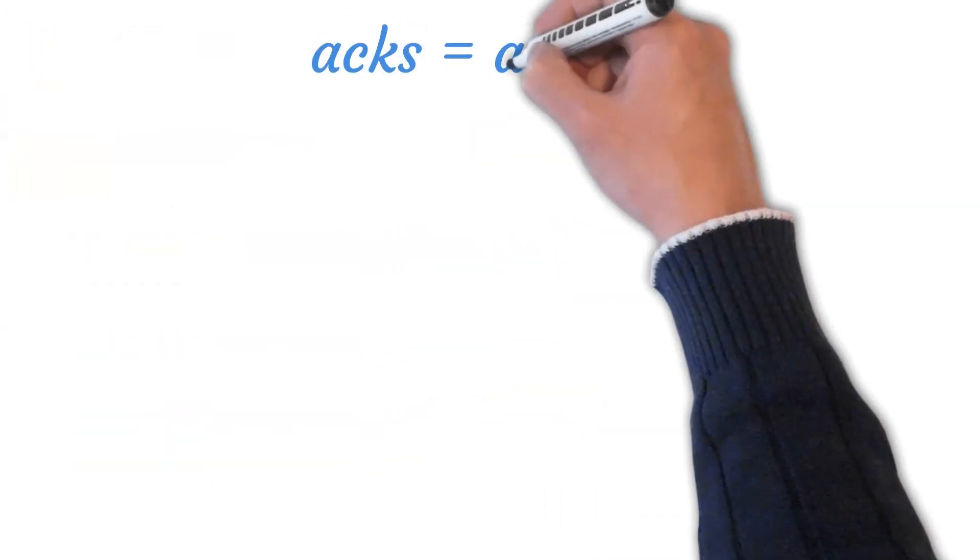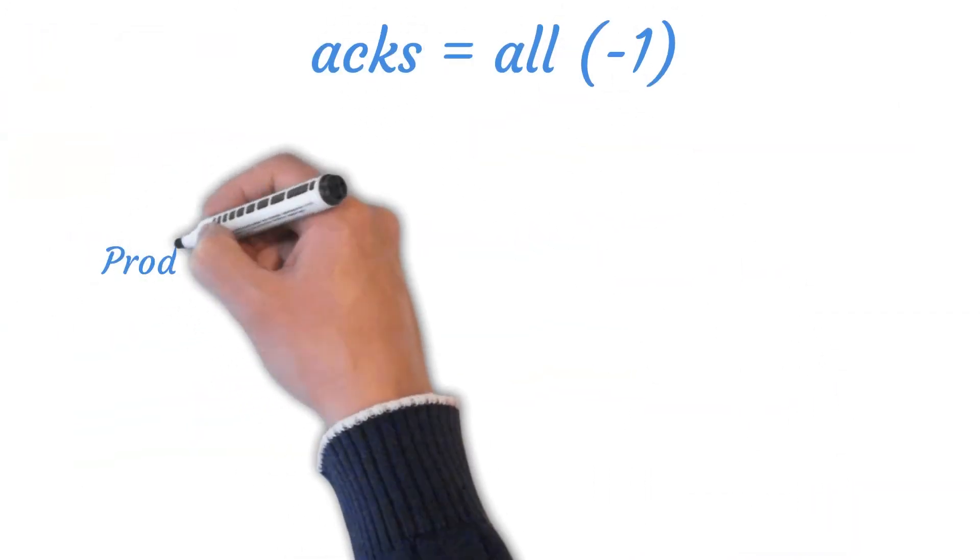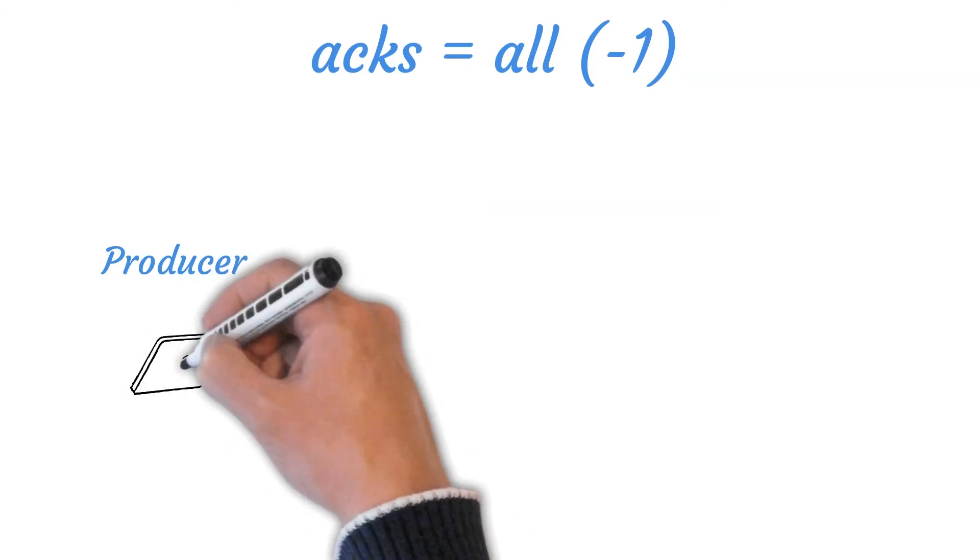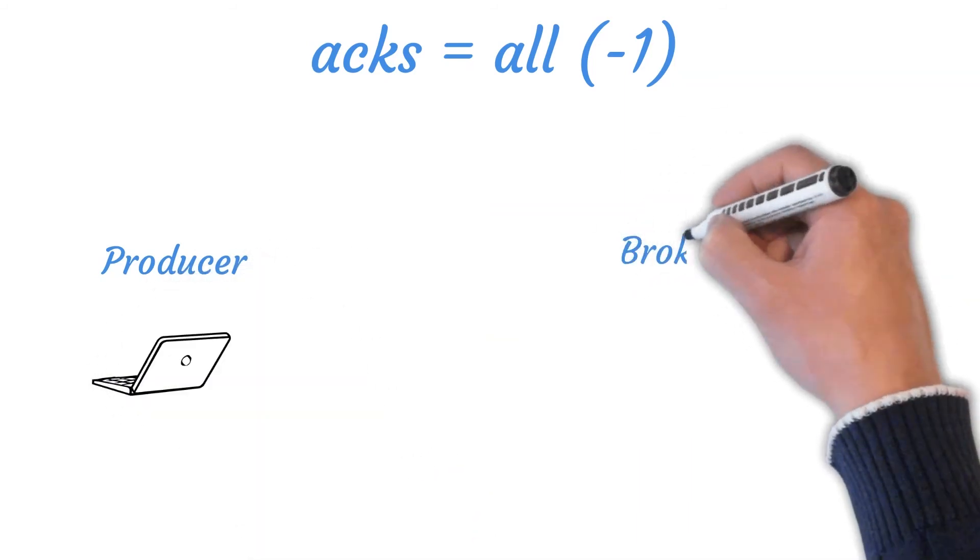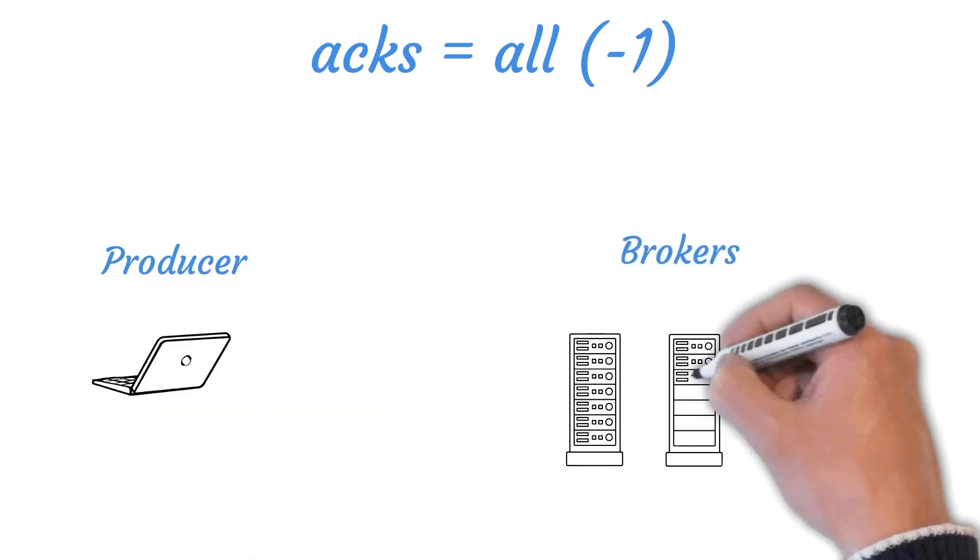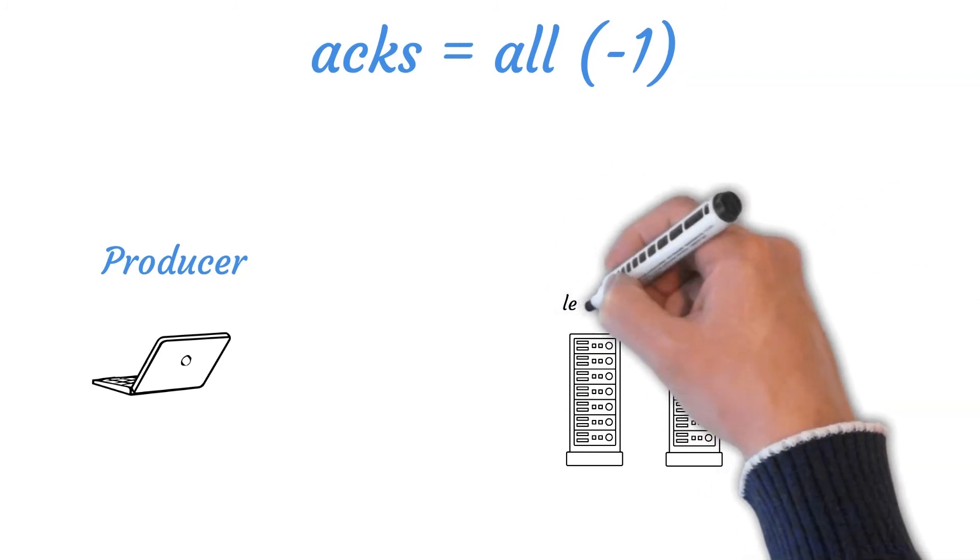Finally, when the acknowledgement equals all or minus one. Setting the acknowledgement value to all means that the producer gets an acknowledgement when all in-sync replicas have received the record.